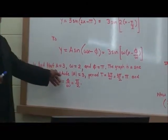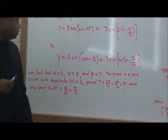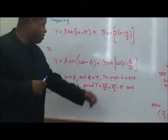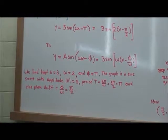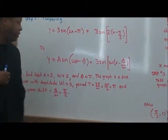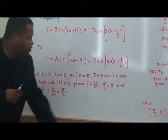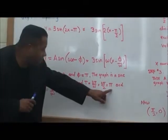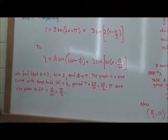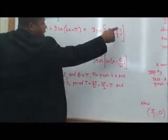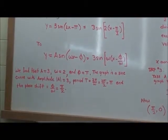The graph is a sine curve with amplitude equal to the absolute value of A, which is 3. The period T equals 2π divided by ω equals 2π/2, which gives a period of π. And the phase shift is π/2.